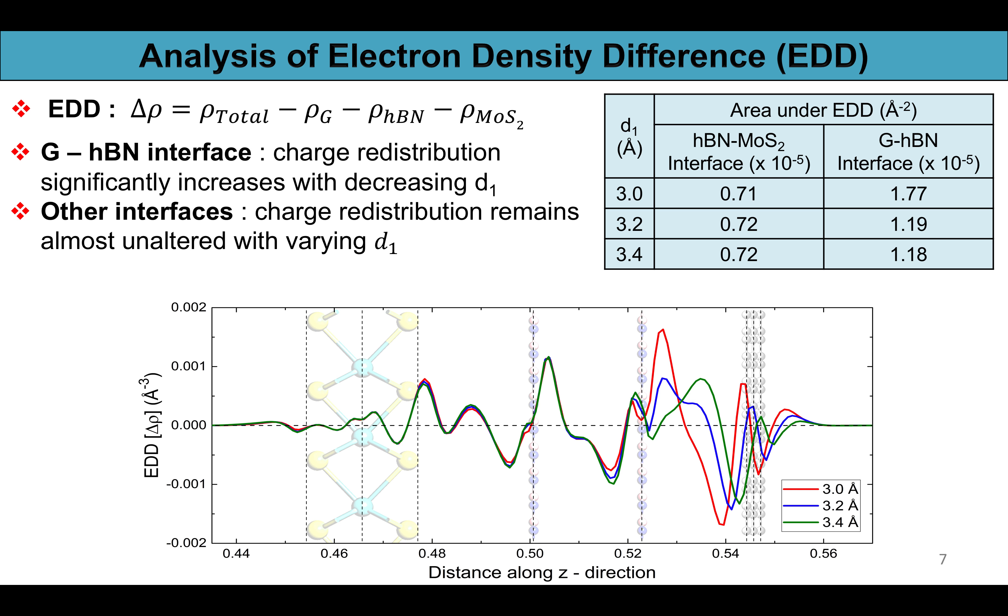It originates from the interaction between the pz orbitals of carbon atoms which are susceptible to be perturbed by the interactions from the pi electron clouds of nitrogen atoms of hBN. But this orbital hybridization is less prominent in hBN-MoS2 interface because of the contribution of d orbitals of molybdenum atoms to the band structure whose interactions with s or p orbitals are very limited.